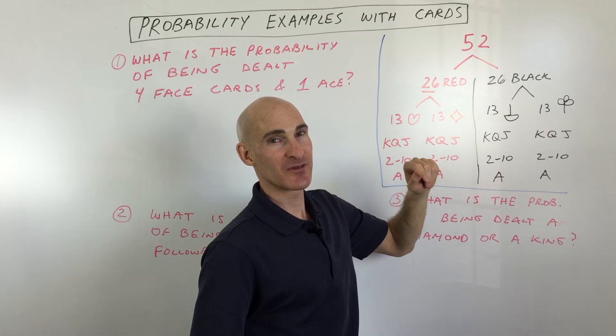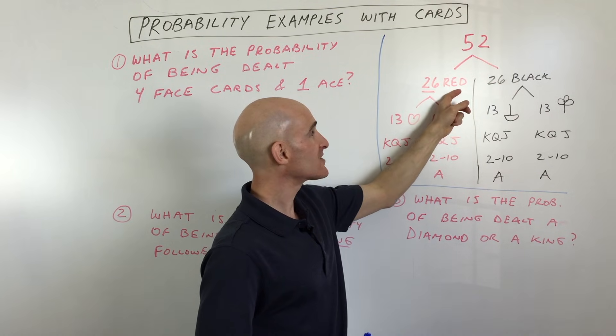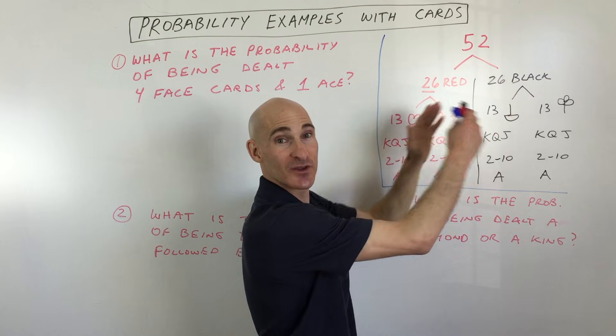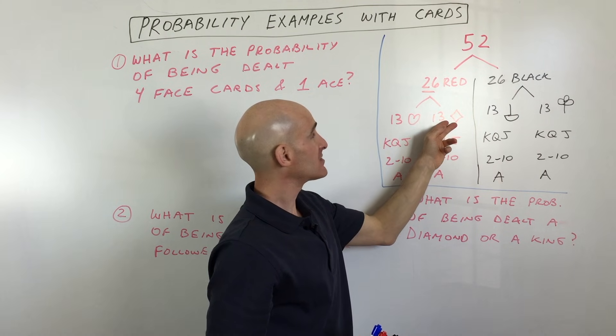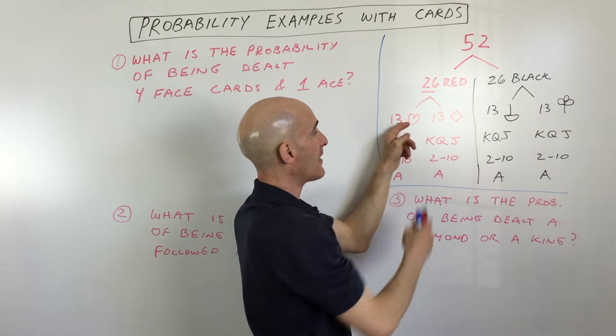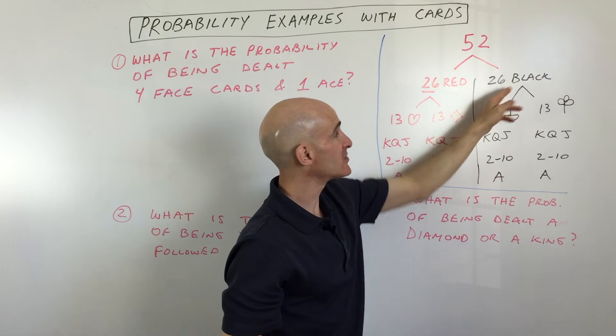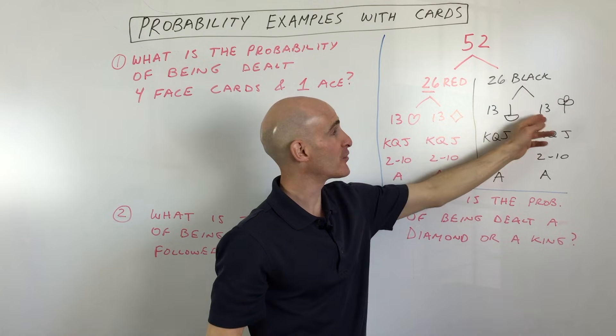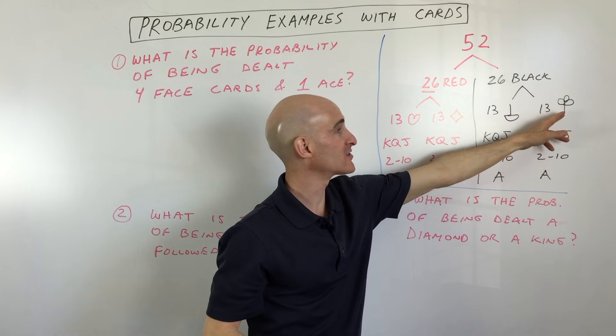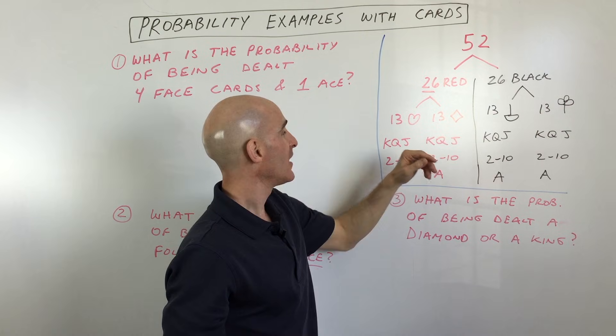52 cards in your basic card deck. 26 of them are red and 26 are black, so it's split in half. 13 are hearts and 13 are diamonds, because the red ones are split in half. The black ones are split in half. 13 are spades, like a shovel, and 13 are clubs. Looks like a three-leaf clover there.